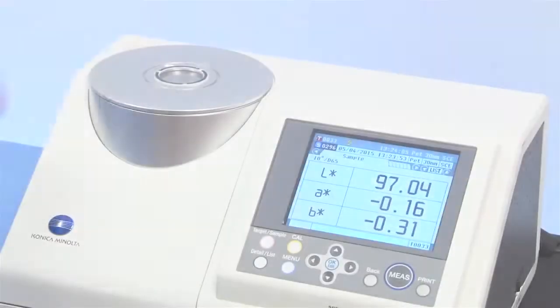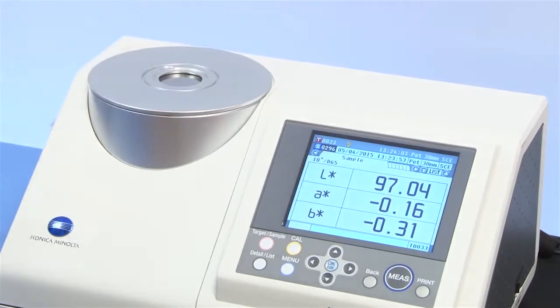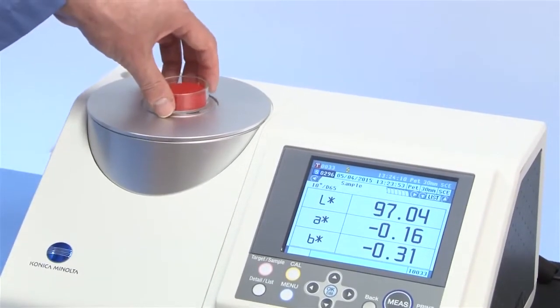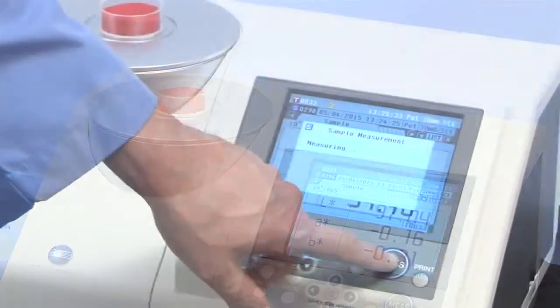This will normalize the instrument when measuring samples through a petri dish. Proceed to measure your targets and samples in reflectance mode as normal.